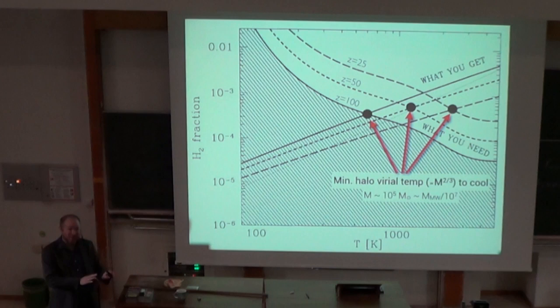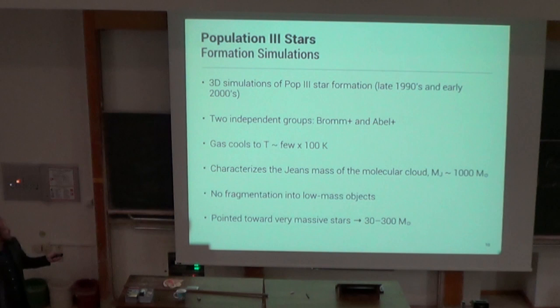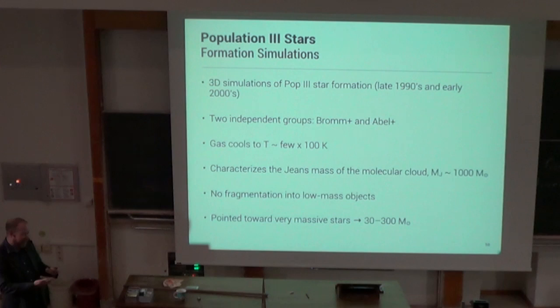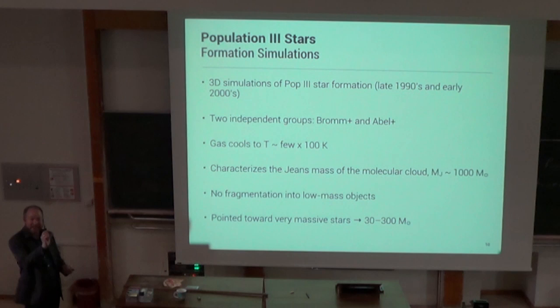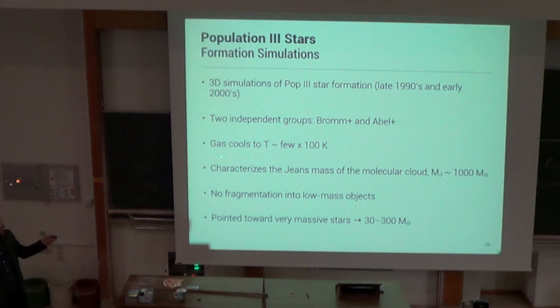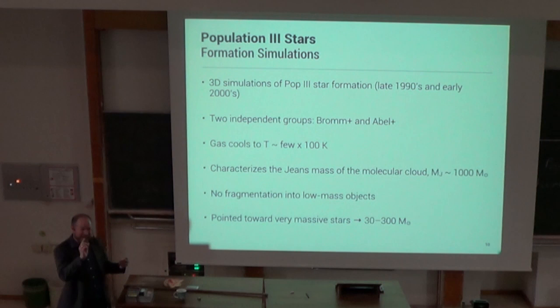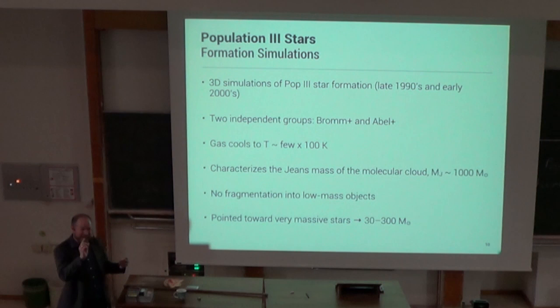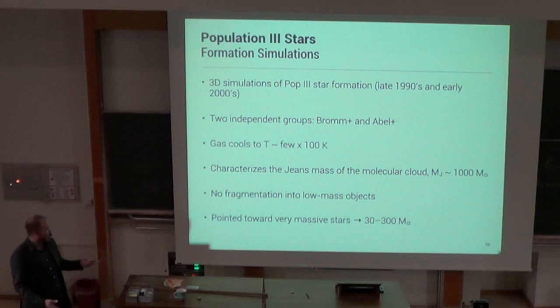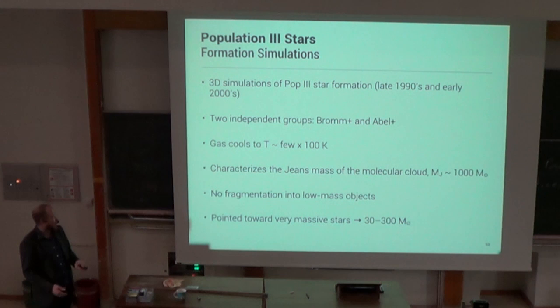This all gave the theoretical basis for three-dimensional cosmological simulations of first star formation. There were two independent groups doing this at the same time — one led by Robert Bromm and Tom Abel around the turn of the century. They found the gas cooled down to a few hundred Kelvin through H2, and you can study accretion rates into the central core. The temperature characterizes the Jeans mass of that inner cloud at around 1000 K, and in these early studies they didn't see any fragmentation. That led to the belief of a single massive star per halo — potentially tens of solar masses, though with a large uncertainty range.